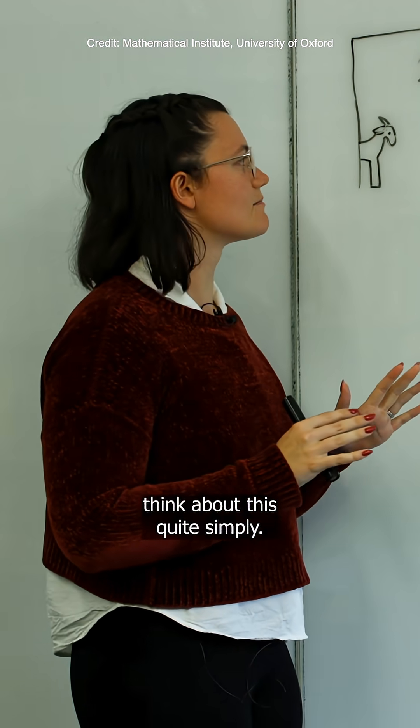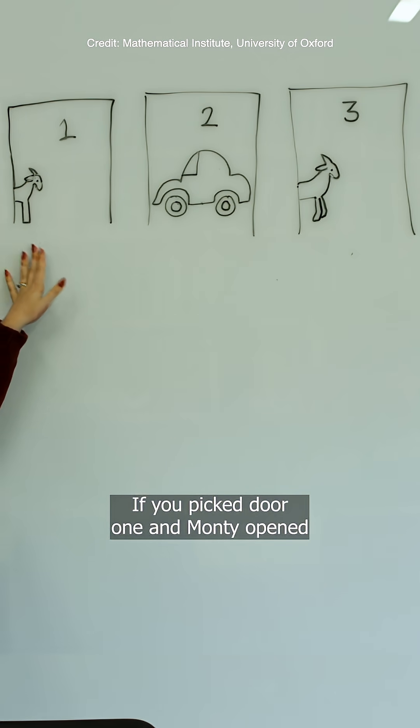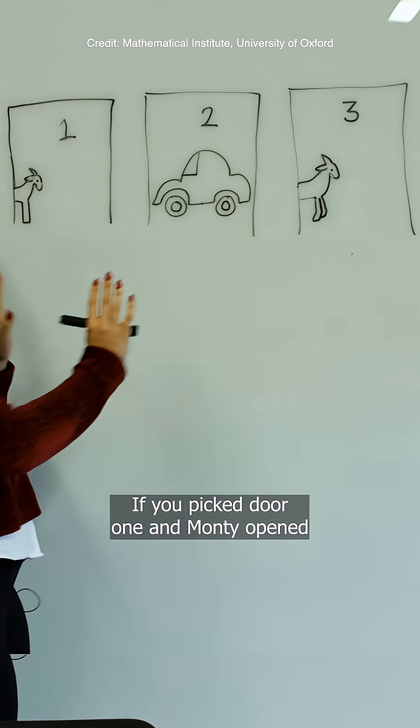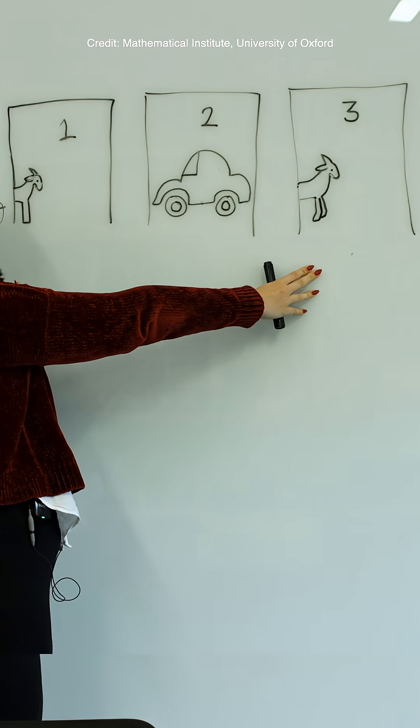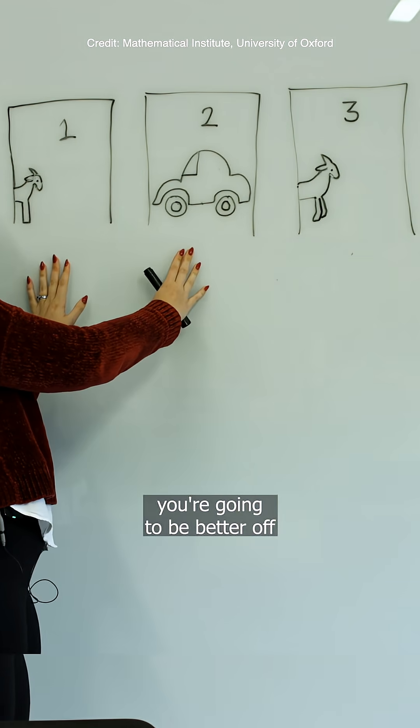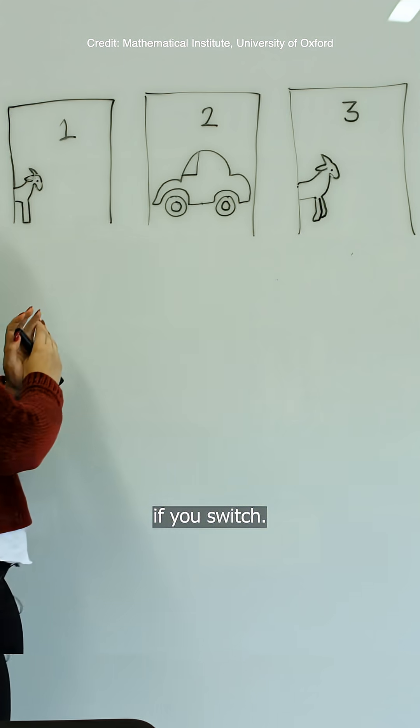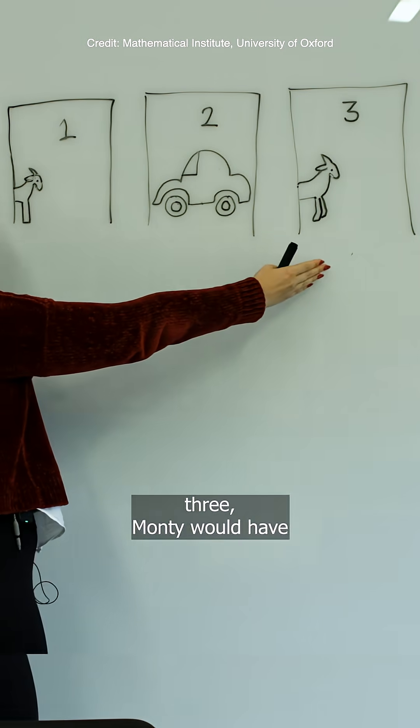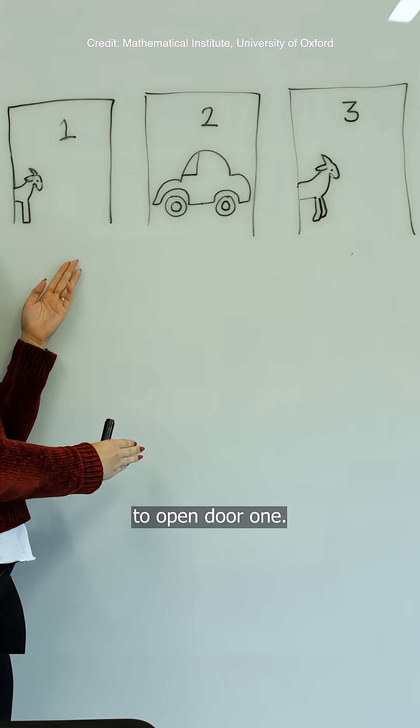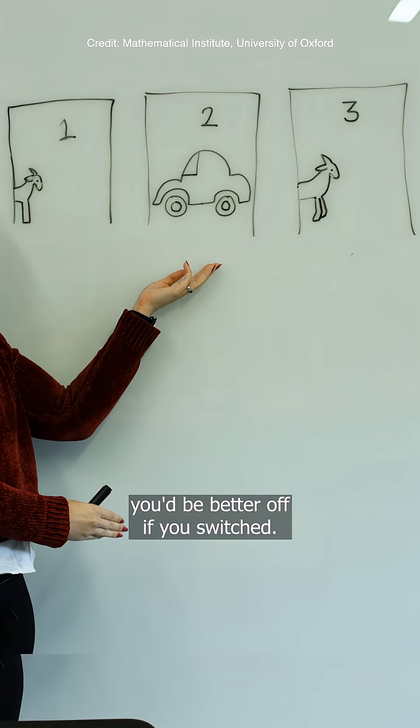Let's think about this quite simply. If you picked door one and Monty opened door three, you're better off if you switch. In the same way, if you picked door three, Monty would have to open door one. And again, you'd be better off if you switched.